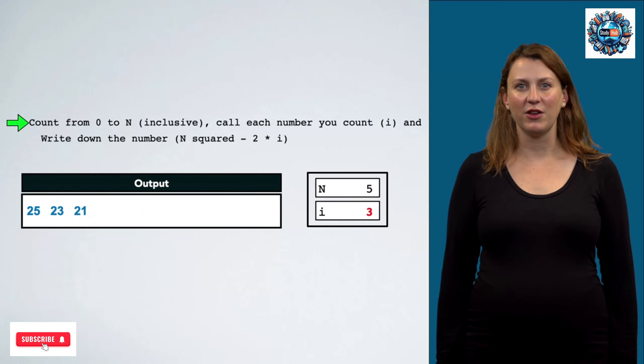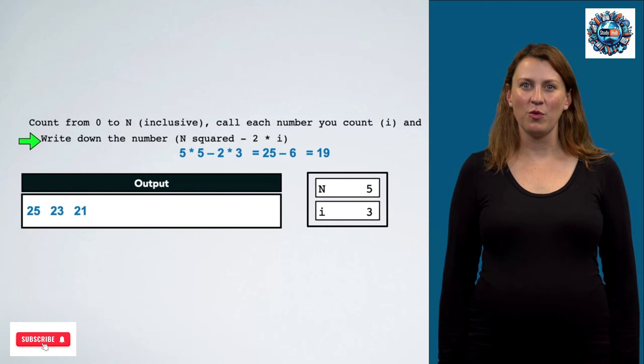Now we're working on i with the value 3. We're going to write down the number, n squared minus 2 times i, 25 minus 6, which is 19, into our output box.